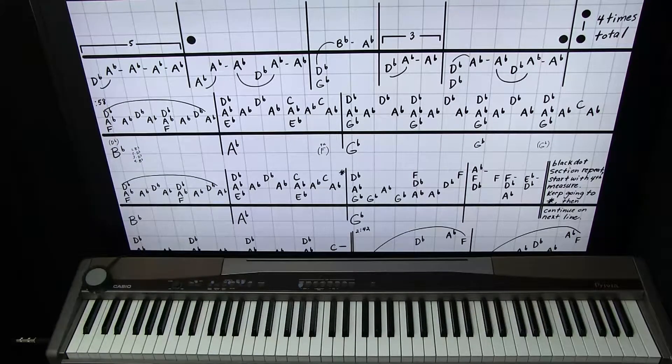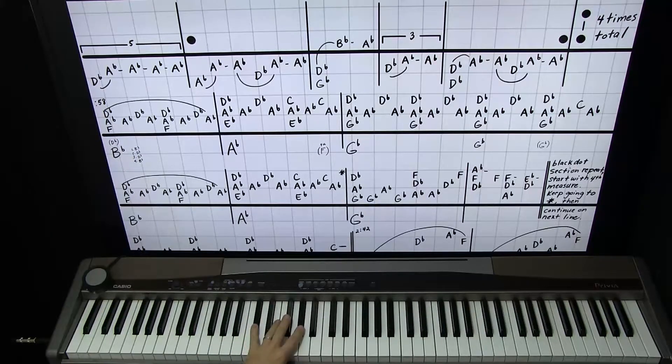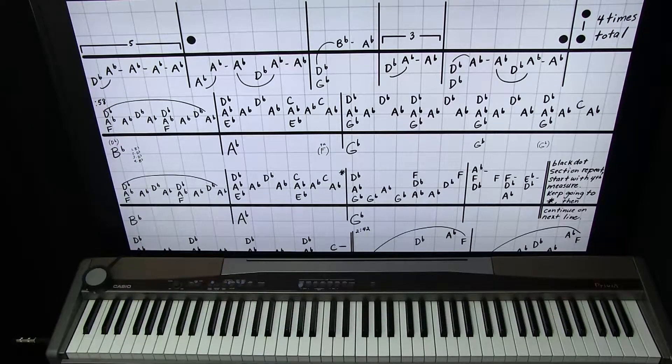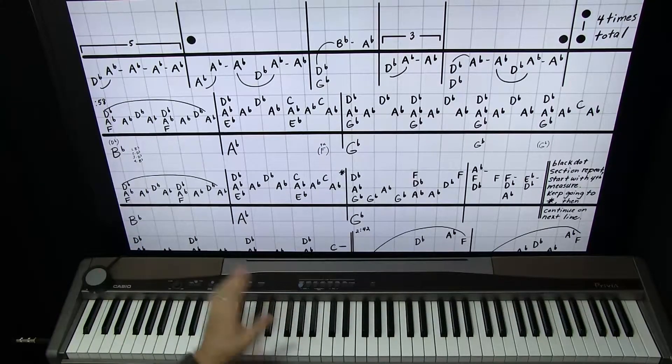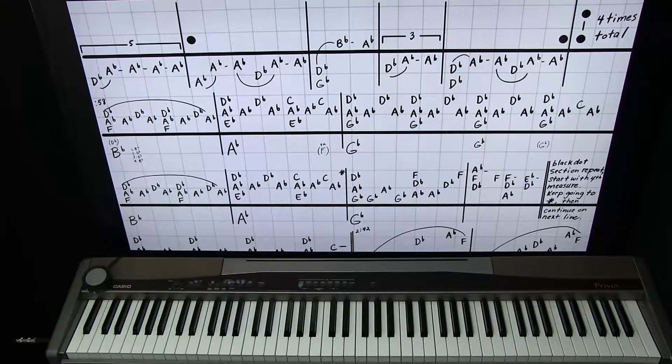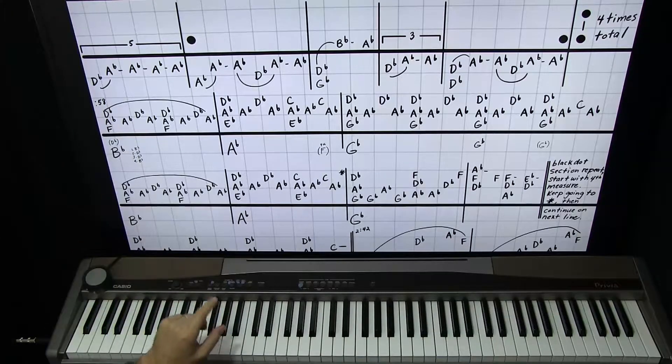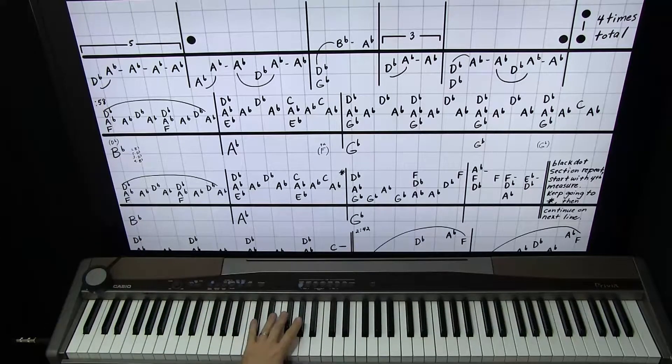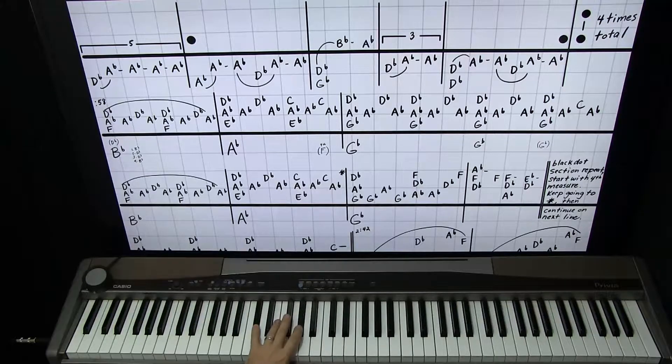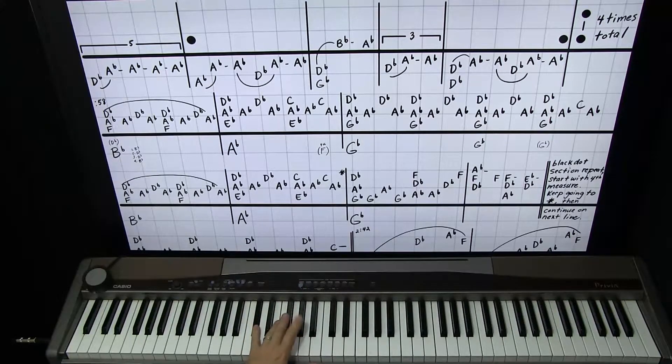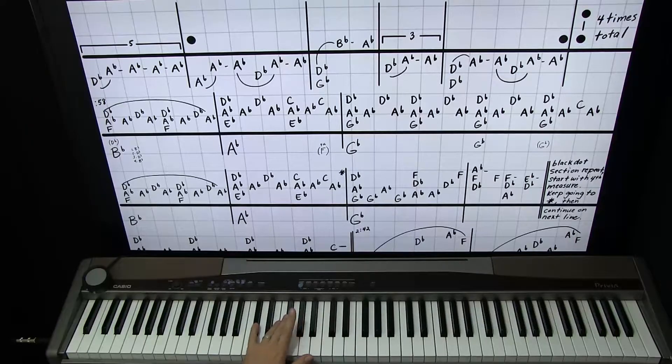This part one, a lot of it's very repetitive, and part of the challenge is just keeping your place where you are. At the very beginning we're going to do this little motif five times: D flat, A flat, and then three more A flats. And the rhythm is da da da da da.